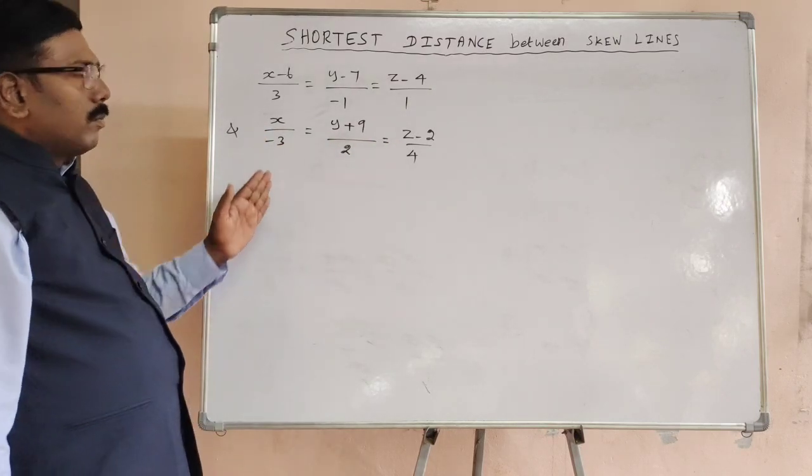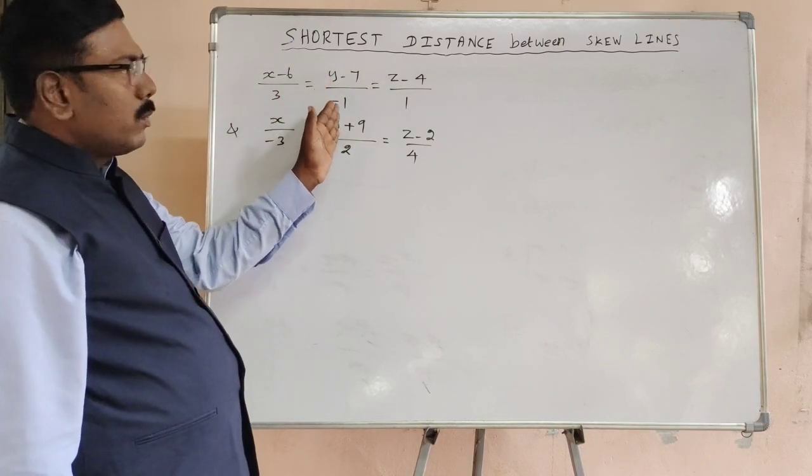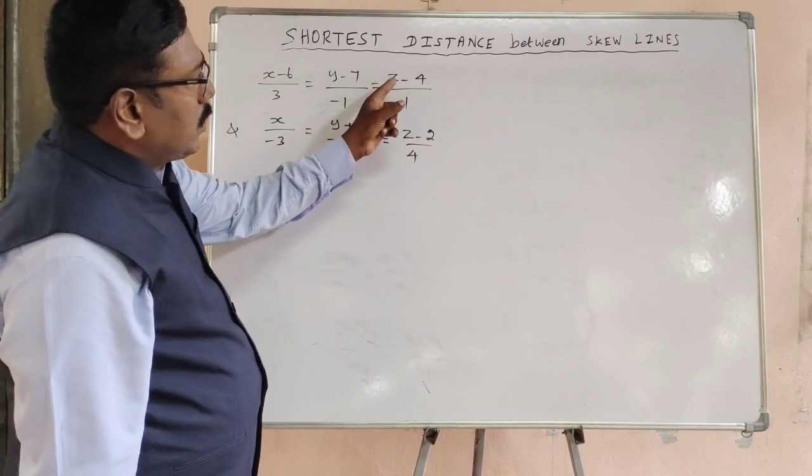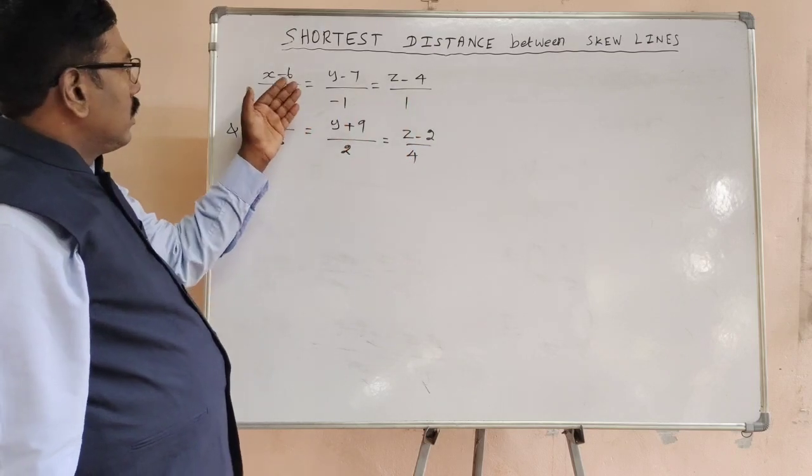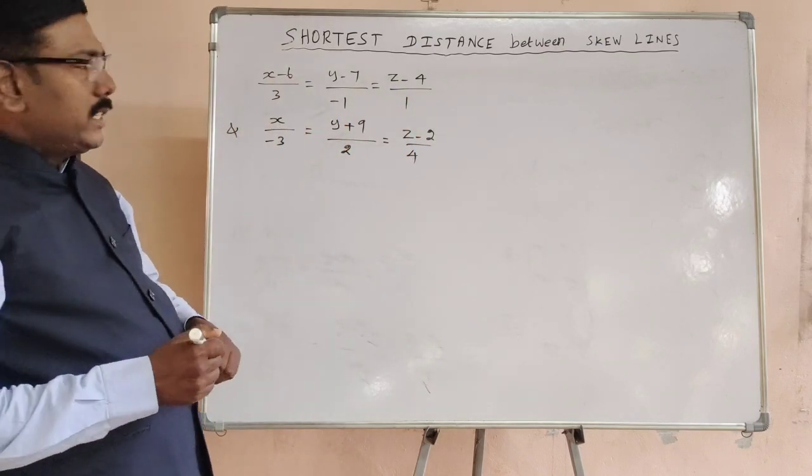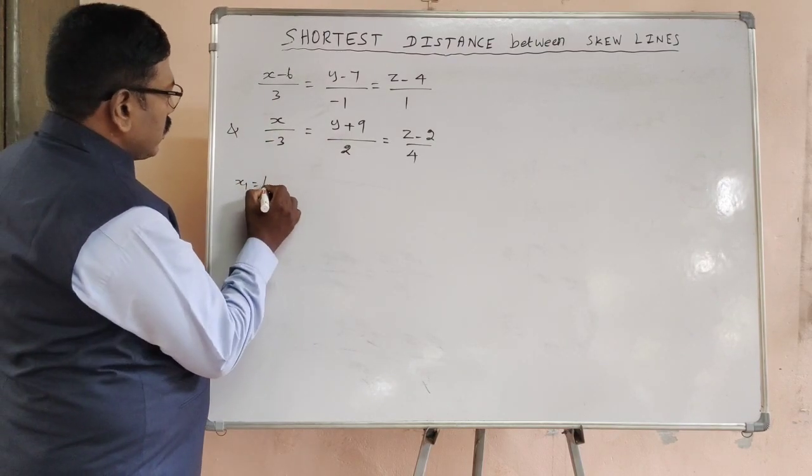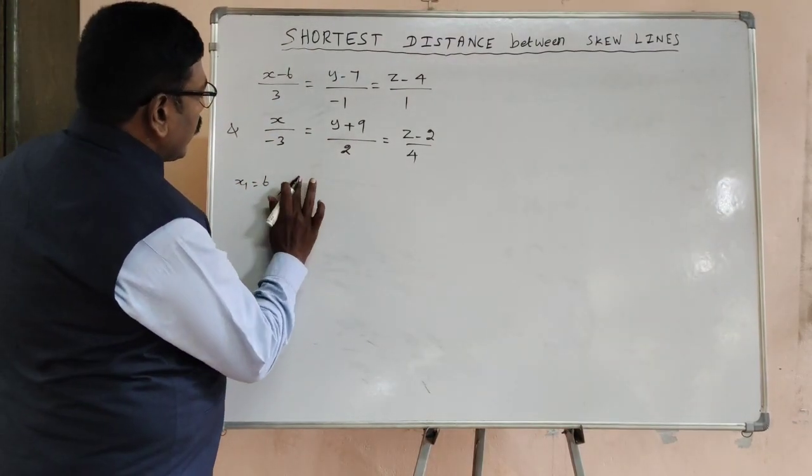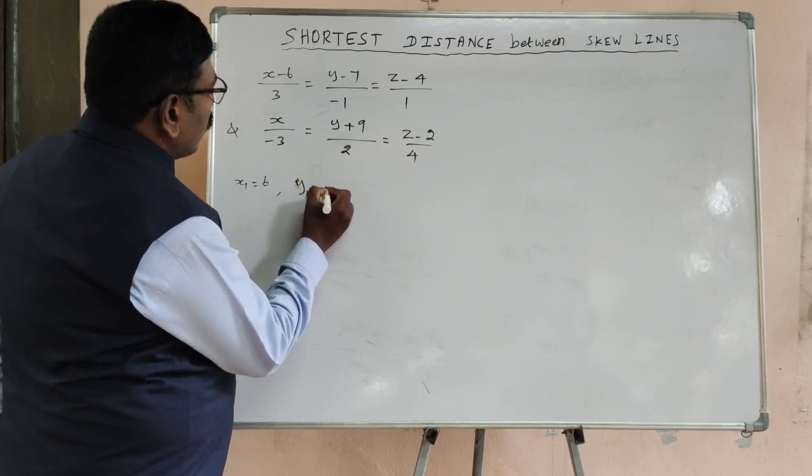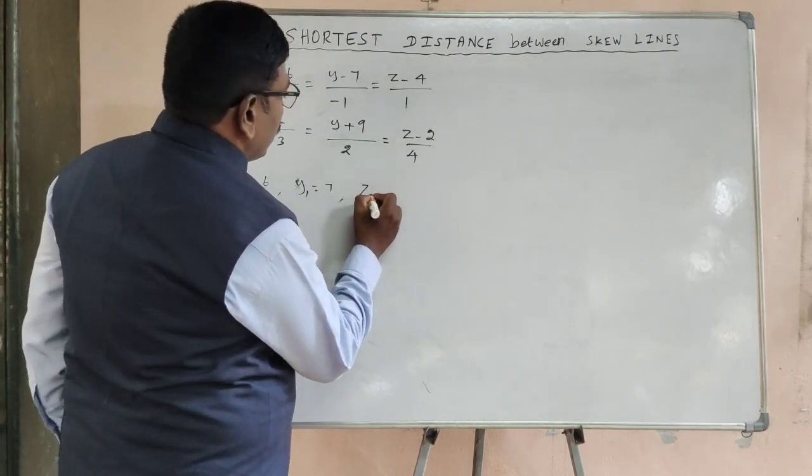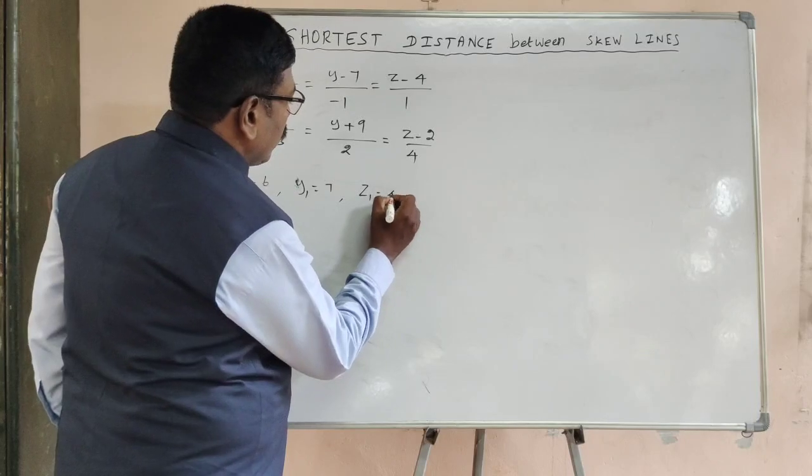We know the standard form: x minus x1 by L1 equal to y minus y1 by M1 equal to z minus z1 by N1. We have to write the coordinates. So x1 equals 6, y1 equals 7, z1 equals 4.